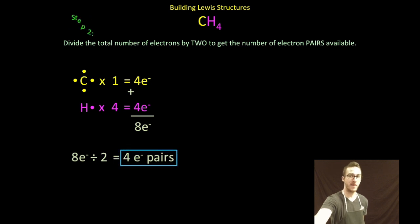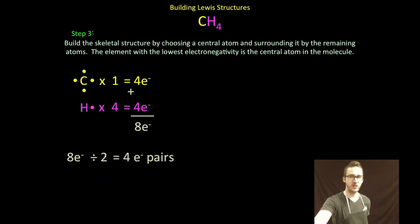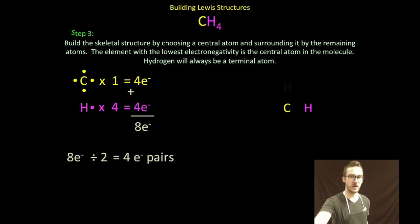Step three is where we start to build our Lewis structure. We determine the element with the lowest electronegativity. We make that the central atom in our molecule, keeping in mind that hydrogen will always be a terminal or non-central atom. So as I try to decide which of my atoms, carbon or hydrogen, is going to go central, right away I should recognize that it's going to be carbon because hydrogen is never going in the middle. However, you can always check your periodic table and think about the trend of electronegativity. So as I build my molecule, I'm going to put carbon in the middle, surround it by those four hydrogens.